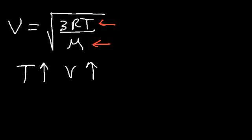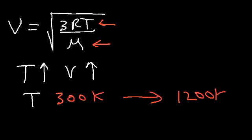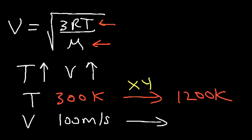So what does that mean? If the Kelvin temperature is 300 and we quadruple it to 1200 — increasing it by a factor of 4 — it has to be the Kelvin temperature; Celsius doesn't work well here. If we increase the temperature by a factor of 4 and the velocity was 100 meters per second, the velocity will increase by the square root of 4, which is 2. So the velocity doubles to 200 meters per second.